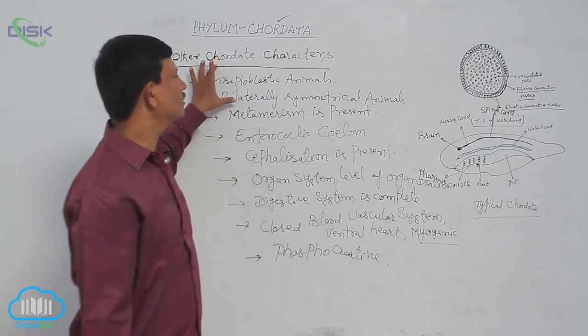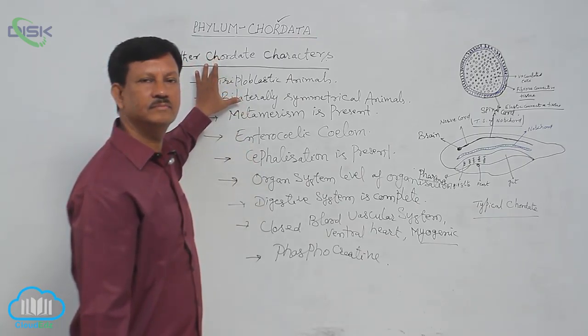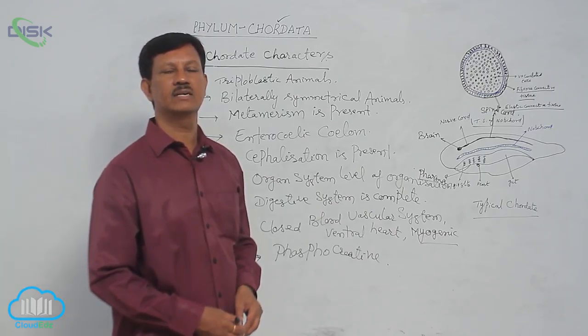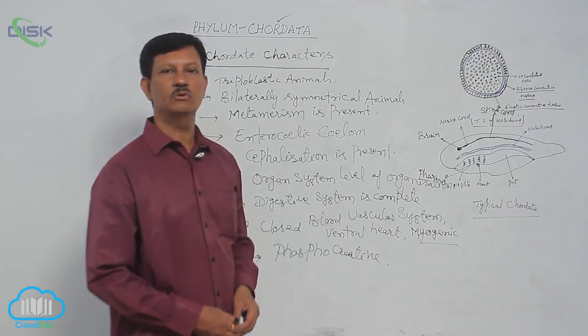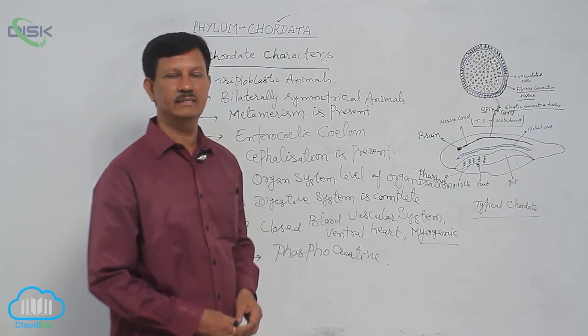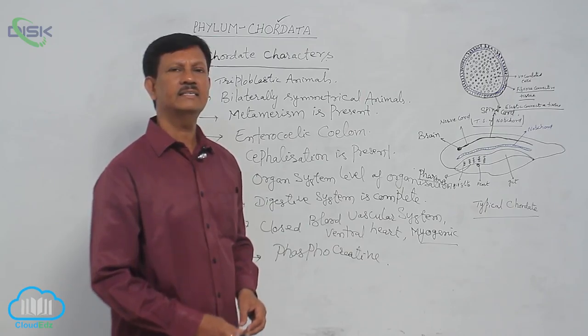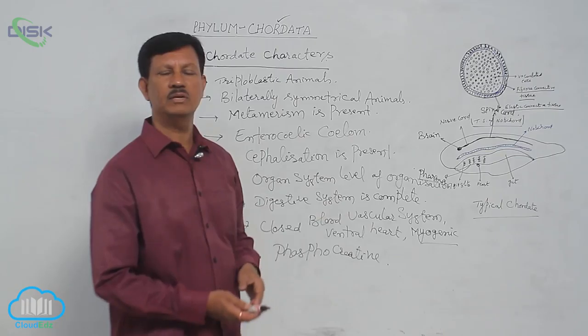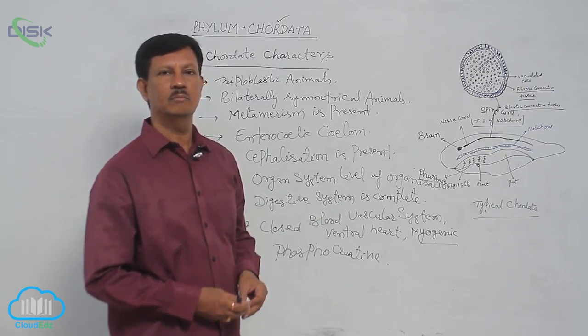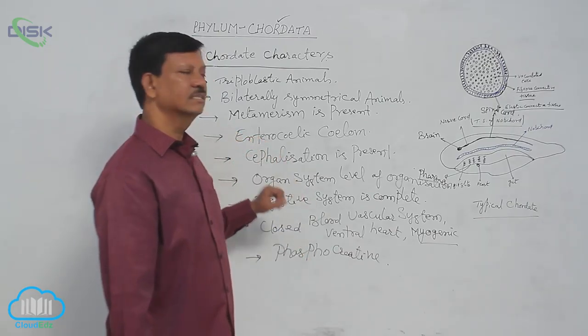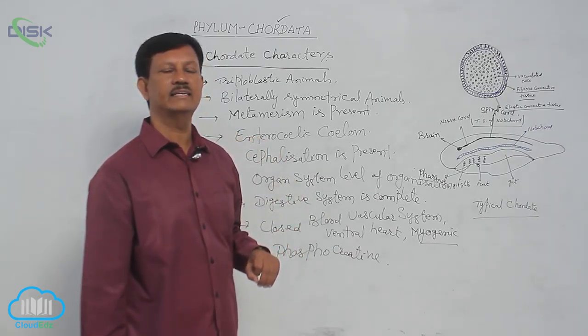These are the other chordate characters. In addition to that, there are many other characters also present. They are triploblastic animals, bilaterally symmetrical animals, metameric segmented animals, and true coelom is present and cephalization is also present at the anterior region of the body.